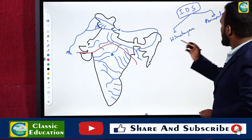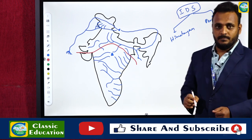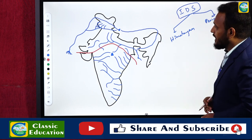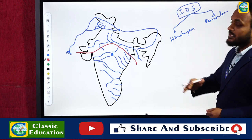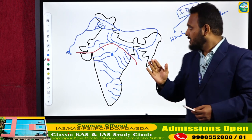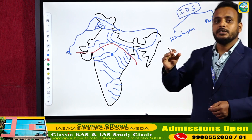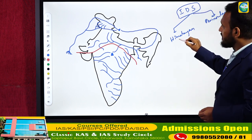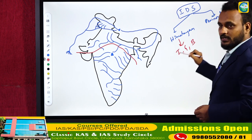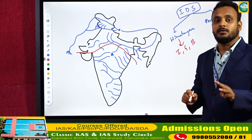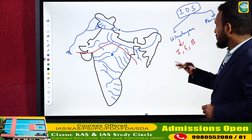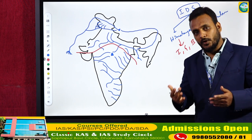A peninsula is nothing but a landmass which is covered by water on three sides. This is the classification we use when studying the Indian drainage system: Himalayan rivers and Peninsula rivers. Examples of Himalayan rivers are Indus, Ganga, and Brahmaputra — these are the three most important Himalayan rivers, with thousands of tributaries. We must concentrate on these three for examination purposes.